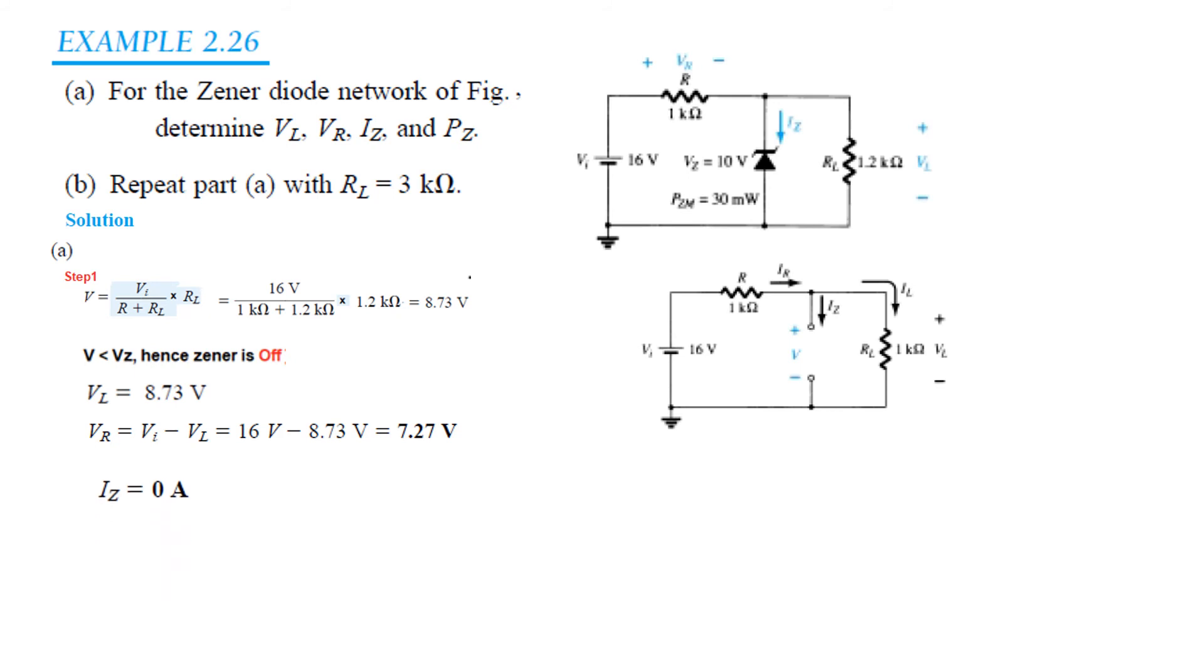Since this is open or off, no current is flowing and therefore IZ is equal to 0. And power is VZ times IZ. Since IZ is 0, therefore power is also 0 watt.